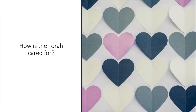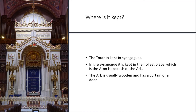We know the Torah is treated with great reverence and respect — but how is it actually cared for? In a synagogue, the Torah used in a religious service is kept in the holiest place, which is the Aron Hakodesh, or the Ark. The Ark is usually wooden and has a curtain or a door, as you can see in the picture.